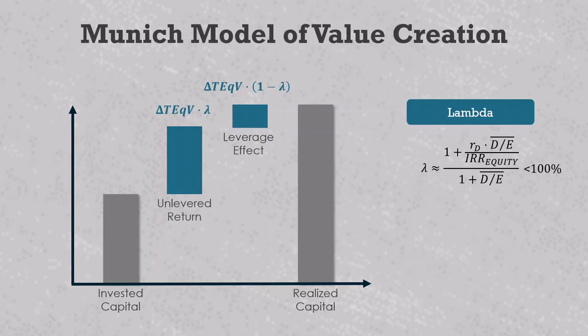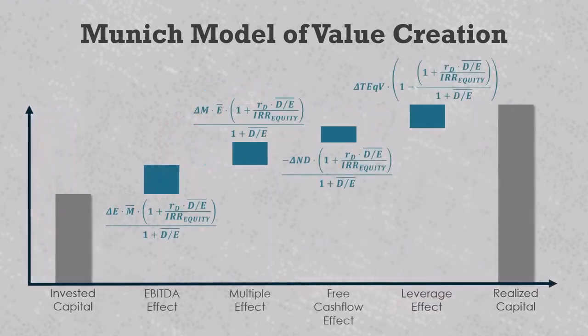You can play with the numbers to see that it also makes sense for other scenarios, like deals with growth equity or deals with negative returns. So these are the final Munich model formulas for the EBITDA effect, multiple effect, free cash flow effect, and leverage effect. They are more complicated than the equations we will discuss in the next video, but they're not too difficult to work with. In practice, you will usually calculate Lambda off to the side of your Excel spreadsheet and then use it as a factor to scale the other value drivers.